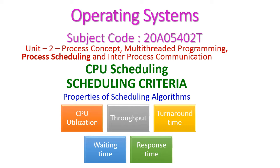Hello friends, welcome to today's operating system class. In this class we will discuss the scheduling criteria of CPU scheduling algorithms — that is, the important properties we should consider while designing the scheduling algorithm. Those are CPU utilization, throughput, turnaround time, waiting time, and response time of the given processes.